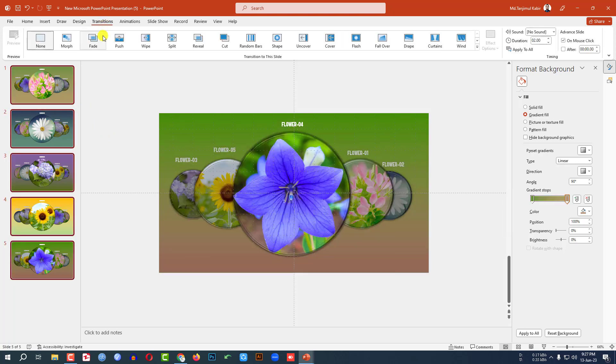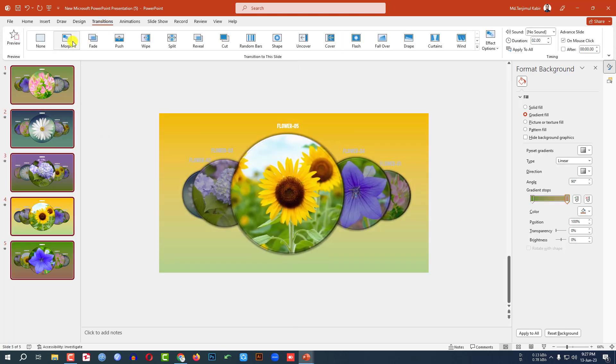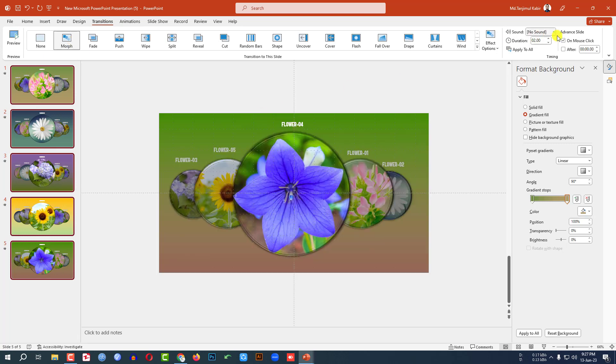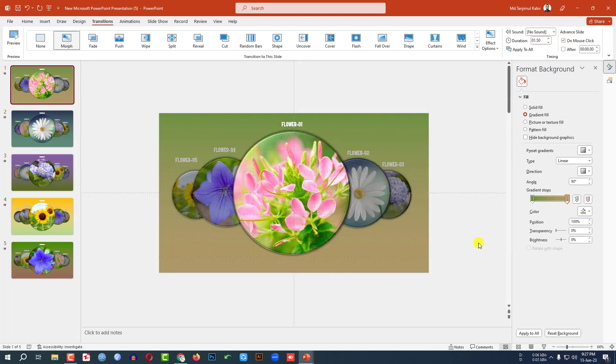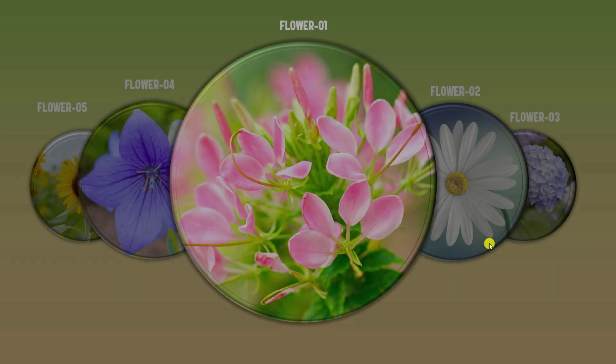Now select all of these slides. Go to Transitions, click on Morph, and change the duration to 1.5 seconds. Let me watch the slideshow.